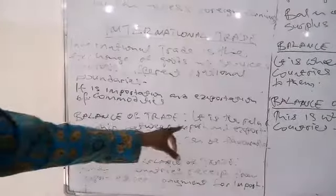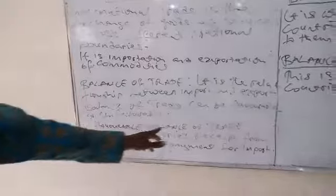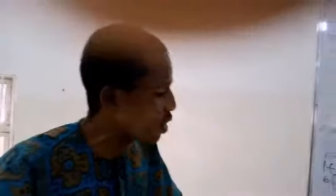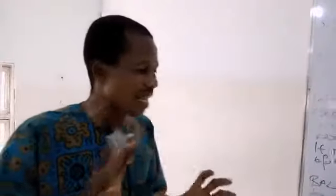Let's look at balance of trade. Balance of trade is the relationship between import and export — the relationship between what you are moving from other countries to your country and what you are selling from your country to other countries. Balance of trade can be favorable or unfavorable. Favorable balance of trade is when the money you are receiving from other countries through exports is more than what you are paying for imports.